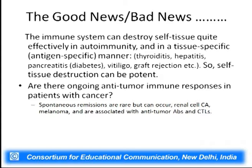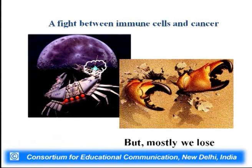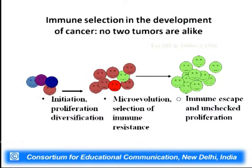Is there an anti-tumor immune response in patients already having cancer? The patient is immunocompromised because of immune suppressants. Renal cell carcinogenic antigens and melanomas have anti-tumor associated antibodies or CTLs. There is indeed a fight between immune cells and cancer cells, but mostly we lose. In immune selection during cancer development, no two tumors are similar — there is initiation, proliferation, diversification, micro-evolution, immune escape, and unchecked proliferation.